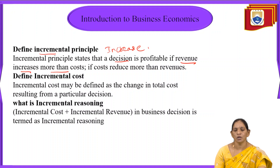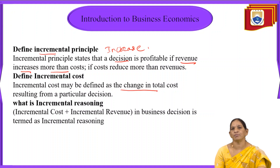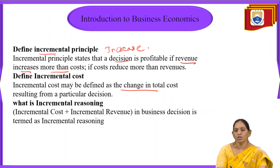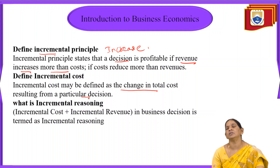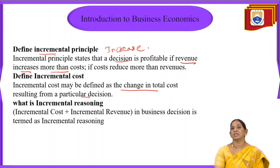Next, define incremental cost. Incremental cost may be defined as the change in total cost resulting from a particular decision. For example, if the expected raw material cost was 5,000 rupees but in the production process it increased to 6,000 rupees, the incremental cost is the additional 1,000 rupees. That increase in total cost is called incremental cost.